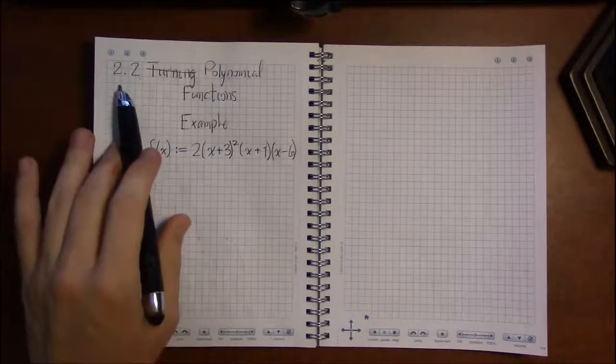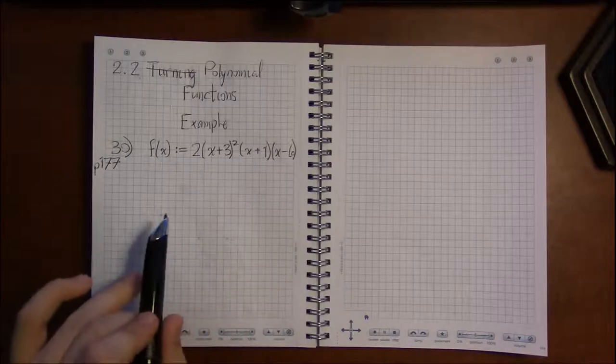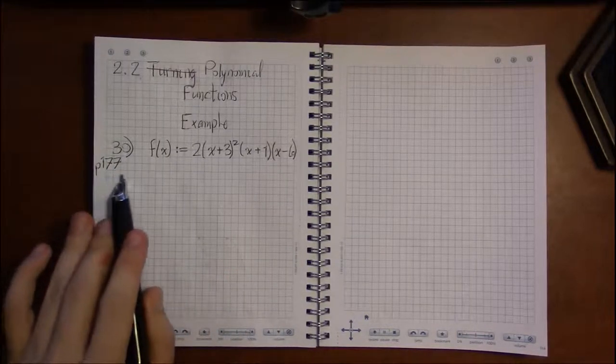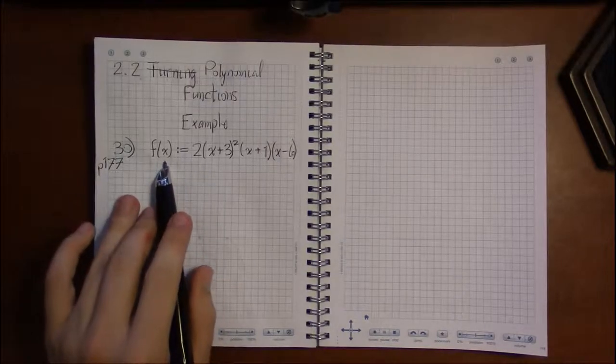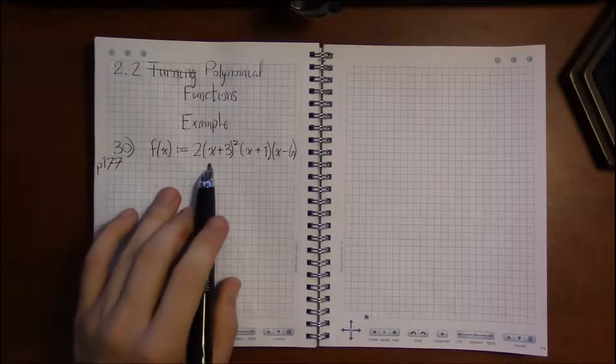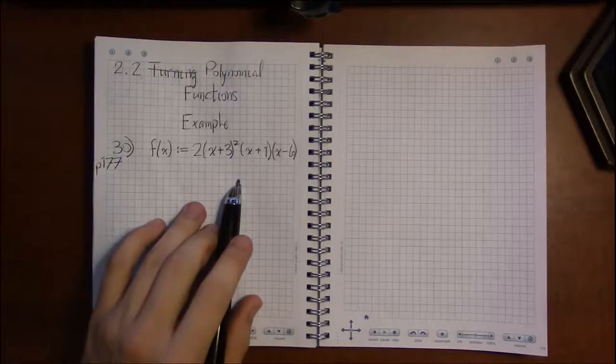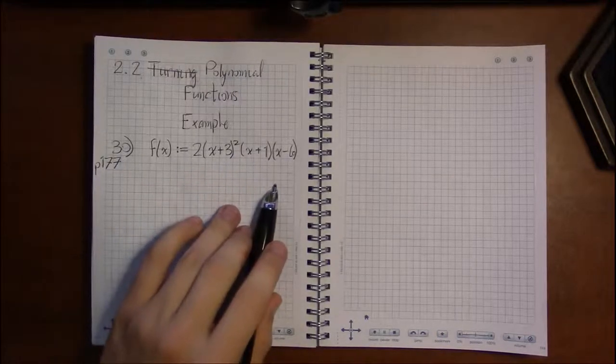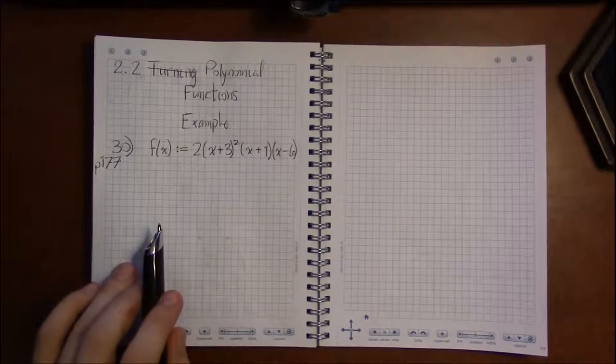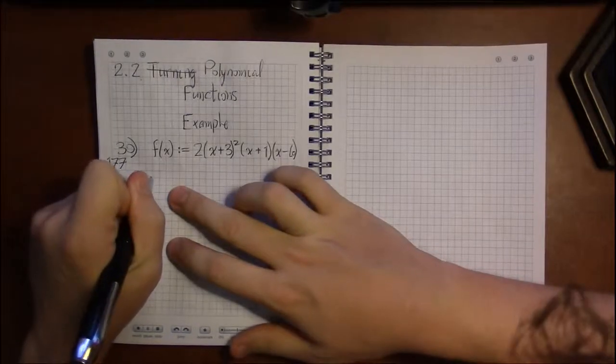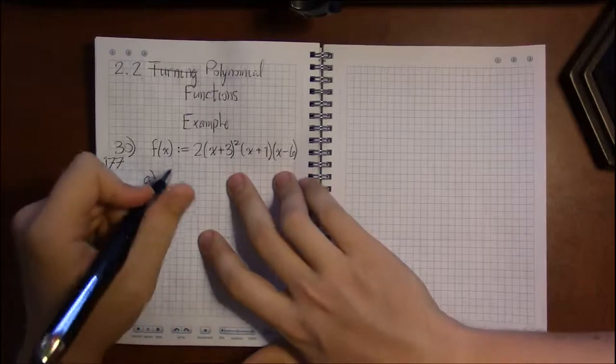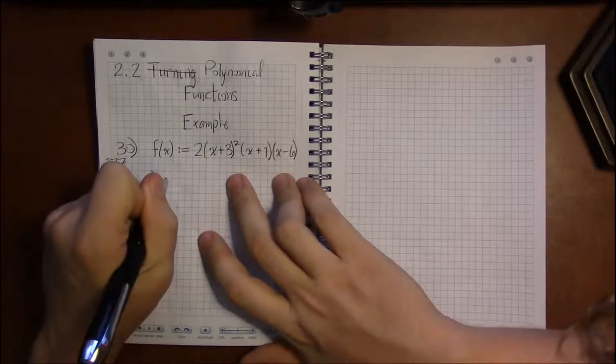All right, let's look at some examples from section 2.2. I'm looking at problem 30 on page 177, where we're given the polynomial f(x) being defined as 2 times (x+3) squared times (x+1) times (x-6). In the first part of this, they ask us to find the zeros, or intercepts, of the polynomial and state their multiplicities.